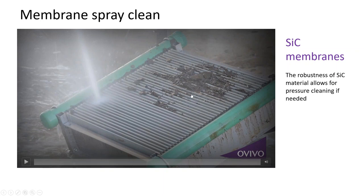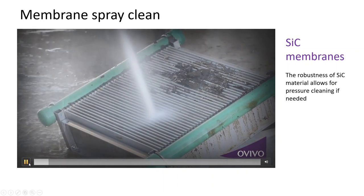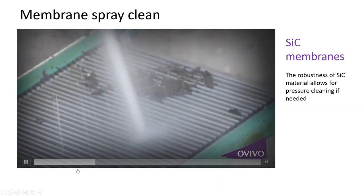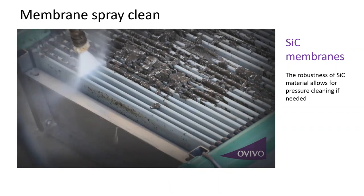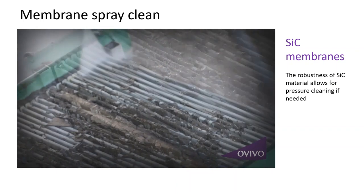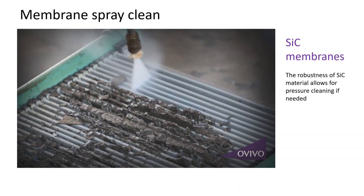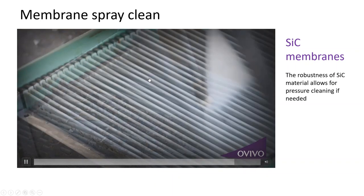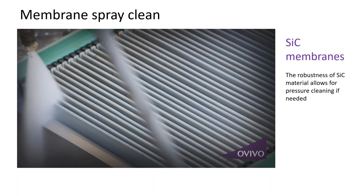Silicon carbide membrane is a very robust membrane. It allows for pressure cleaning if needed. This short video demonstrates how it can be cleaned with pressurized water, showing how robust the membrane is. In terms of hardness, it is one level below diamond — a really tough material — and very easy to clean after the storm. As you can see, it comes sparkling clean with the spray wash.